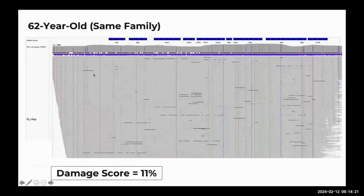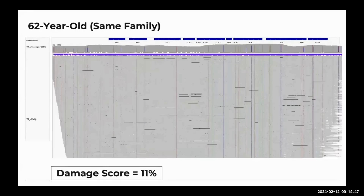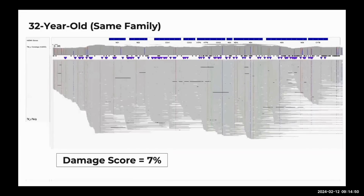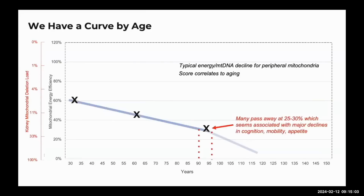Mitochondria are passed down from the mother to the child with absolutely no modification — there are about 500,000 mitochondrial DNA in each egg cell. The nuclear DNA comes from both parents, but the mitochondrial DNA just comes from the mother. So in theory my scan should look the same as my mother's. But you can see the difference: I only have an 11 percent damage score, and my nephew, descended through my sister, has a seven percent damage score.